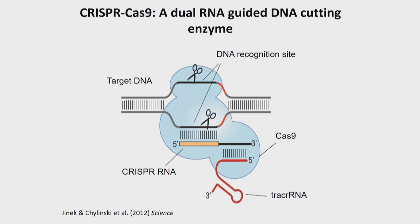In the course of investigating how this protein works, we recognized that it is an enzyme — a chemically active protein that works by recognizing a 20-letter sequence in a DNA molecule. What you can see on this cartoon is the DNA opening up inside the Cas9 protein, which is the blue molecule. That recognition site occurs at a place that matches the 20-letter sequence in a CRISPR RNA molecule.